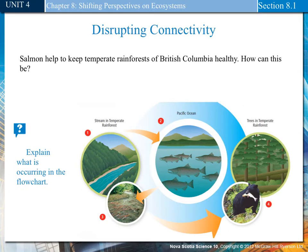Disrupting connectivity. Salmon help to keep temperate rainforests in British Columbia healthy. First, salmon hatch in freshwater streams in temperate forests. Then the salmon spend their adult lives in the Pacific Ocean, picking up nutrients from the marine ecosystem. Then salmon return to their birthplace to spawn. Bears catch the spawning salmon and take their bodies into the forest to eat them. Nutrients released from the salmon's decaying bodies are then absorbed by plants in the forest.